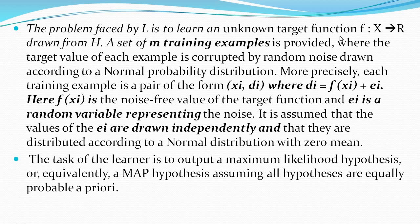We are considering a set of M training examples. Every training example is a pair of an instance and the desired output. The desired output of the training example contains noise and is represented as d(y) = f(xi) + e(i), where f(xi) is the noise-free target function and e(i) is a random variable representing the noise.